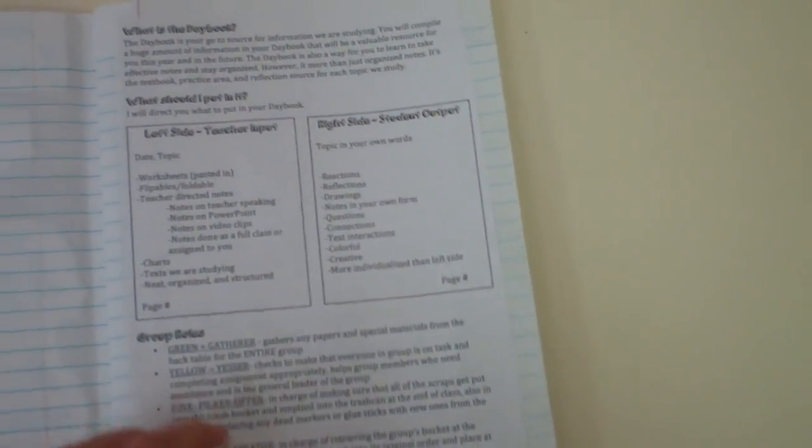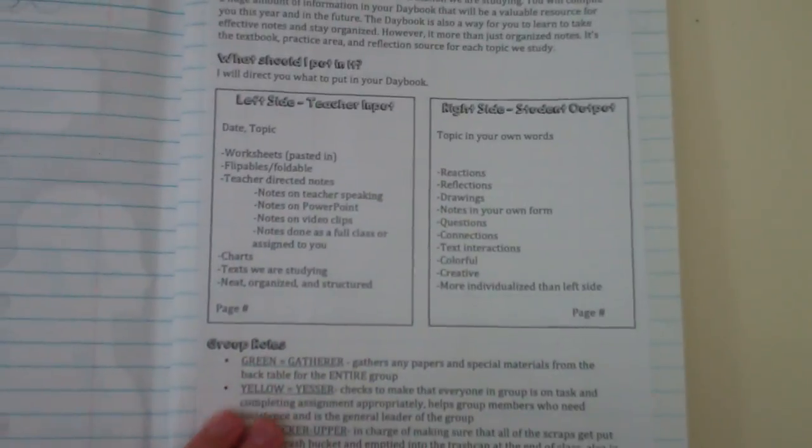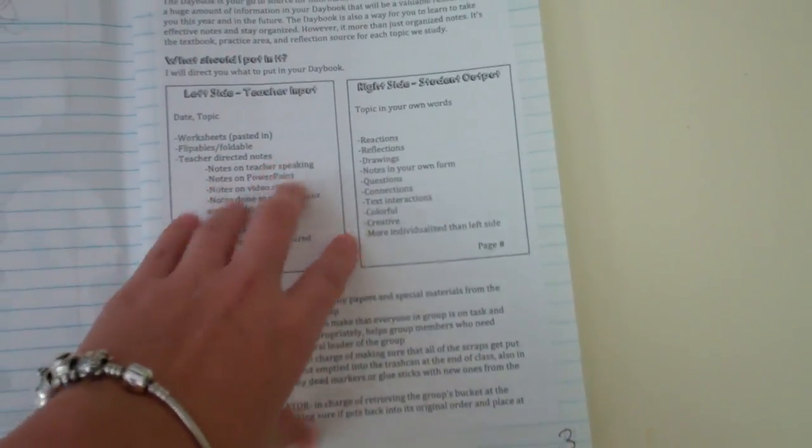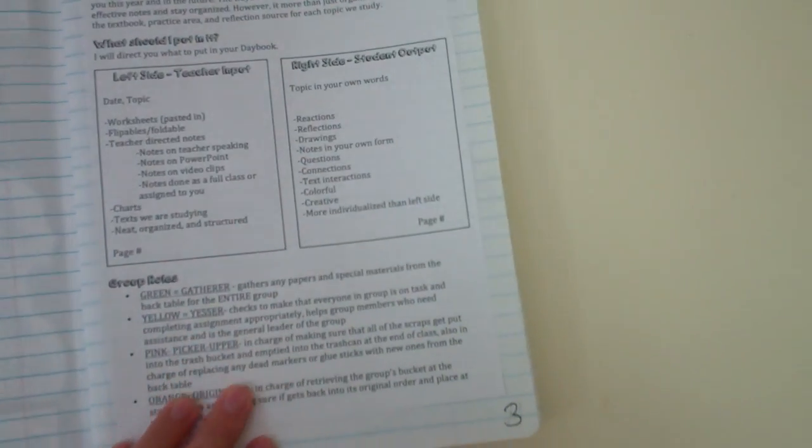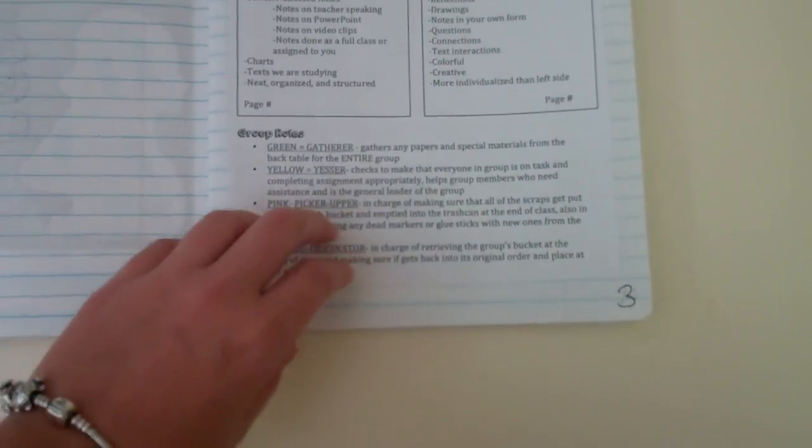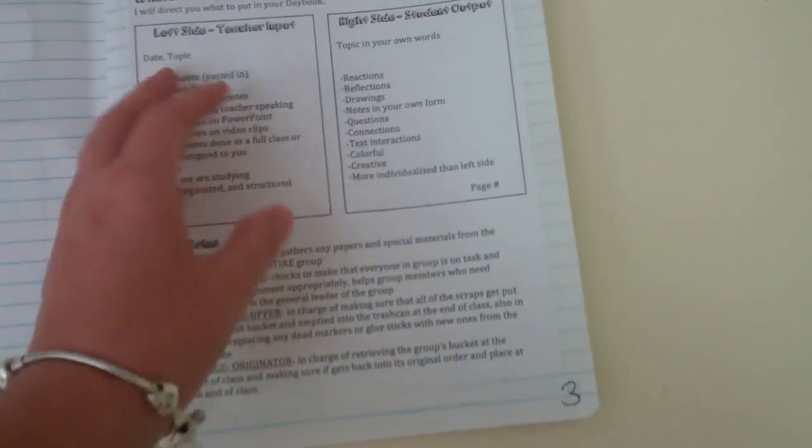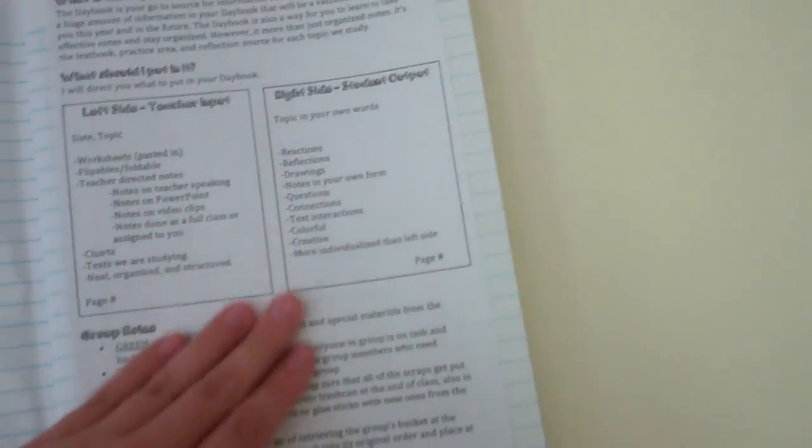Page three then is going to be the explanation of your daybook, which I gave you. So what is the daybook? What should I put in it? A reminder of what things to put on the left side and the right side. And your group roles. So as you're working in your groups, if you need to remember and you can't see the poster in the front of the room, those are there for you on page three. So you have to cut the margins off the page that I gave you and paste it in there.